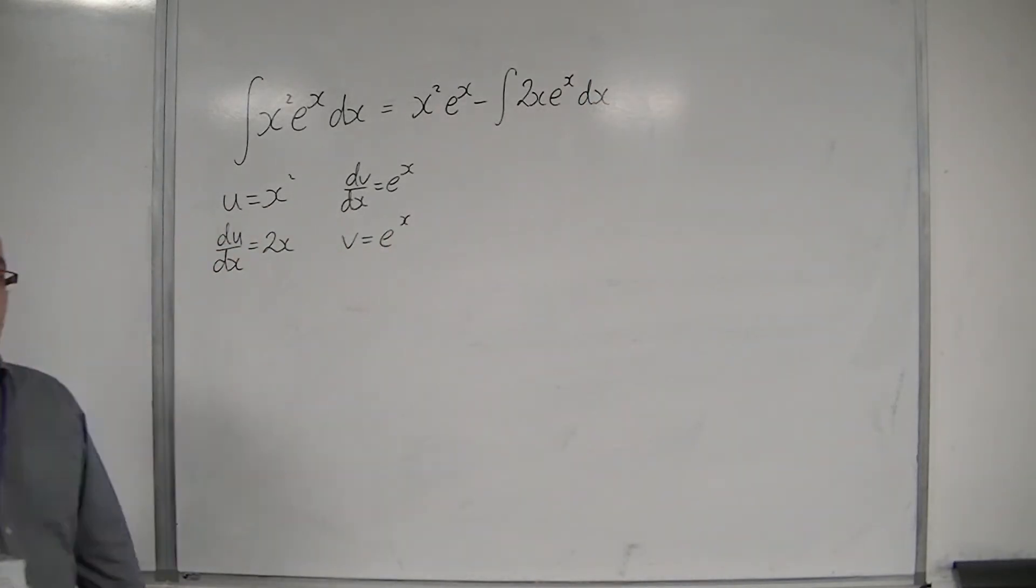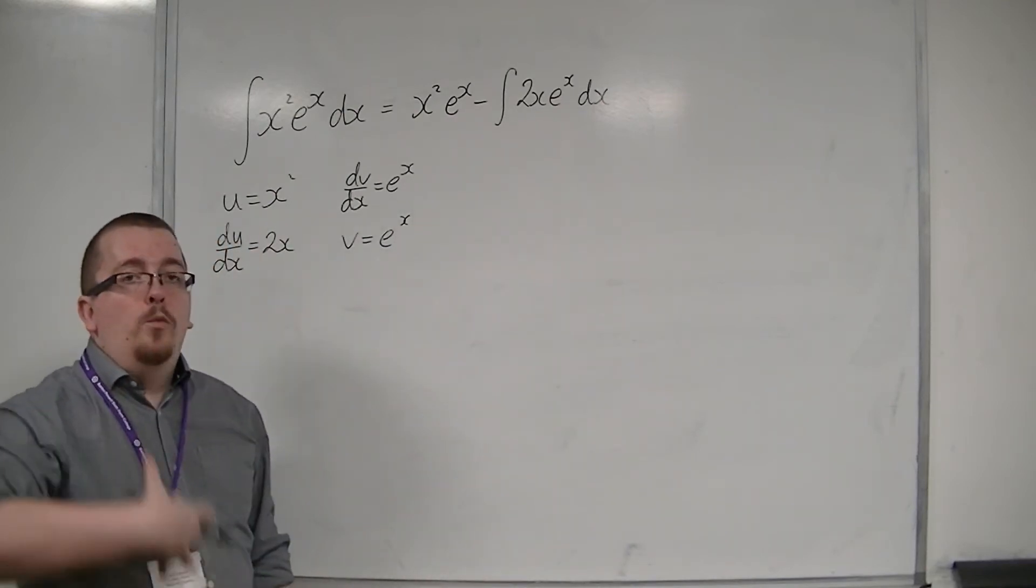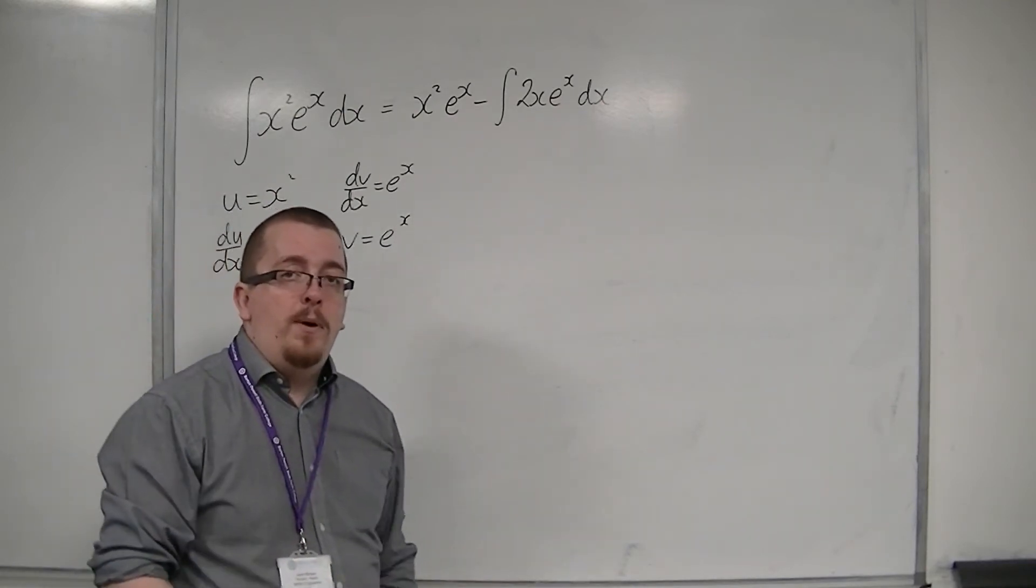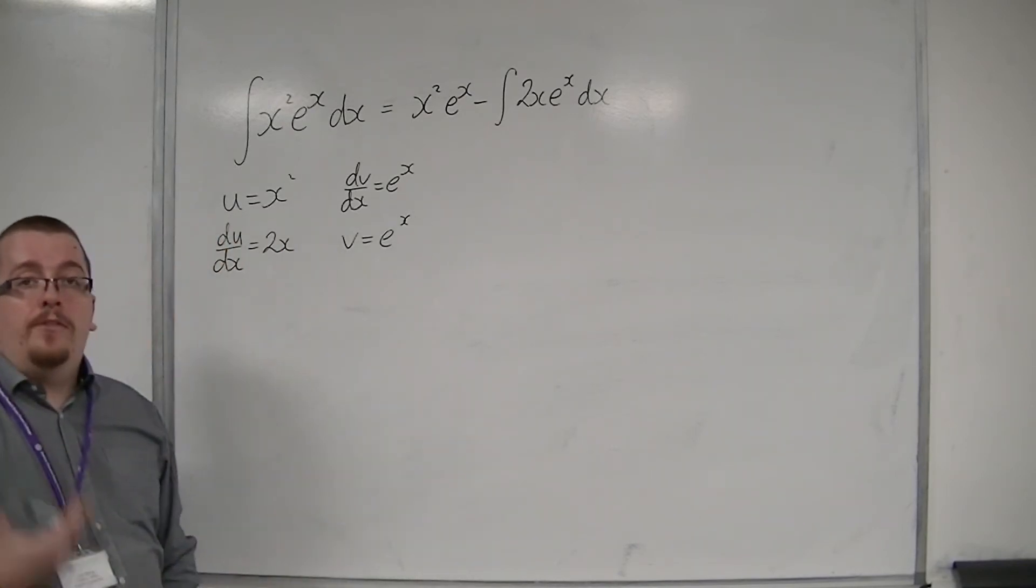Now the problem here is that I now have 2x e to the x, which I must use integration by parts to integrate that. And so I've got to use integration by parts twice.